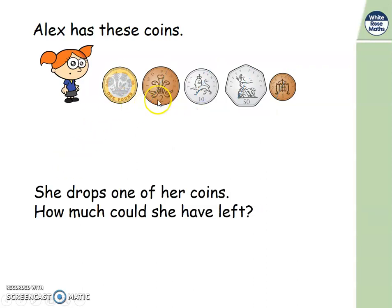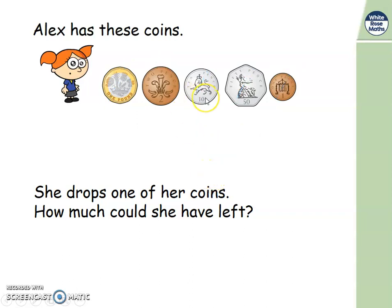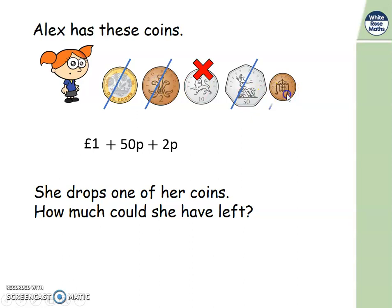What if she dropped her 2 pence coin? She'd have her pound coin: 1 pound, add 50 — 1 pound 50, add 10 pence — 1 pound 60, add 1 pence — that's 1 pound 61 pence. Being systematic: we've tried those, let's try dropping the 10 pence. That leaves 1 pound, add 50p — 1 pound 50, add 2 pence — 1 pound 52, add 1 pence — that's 1 pound 53 pence.